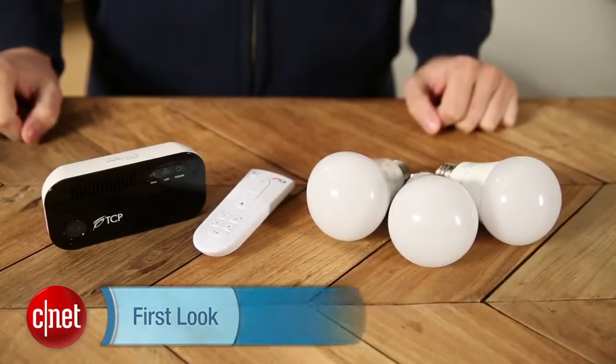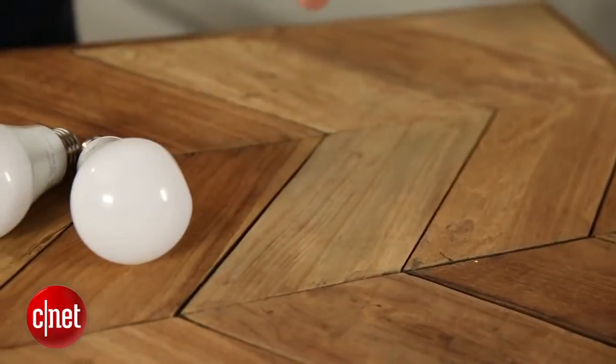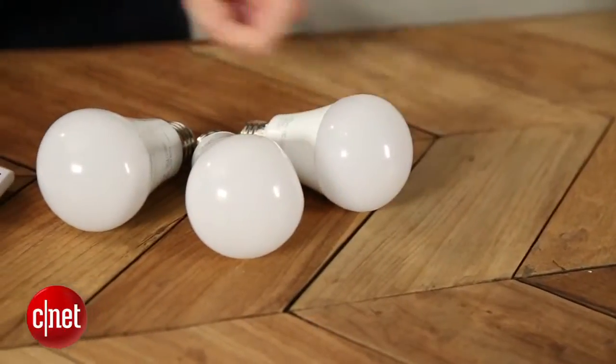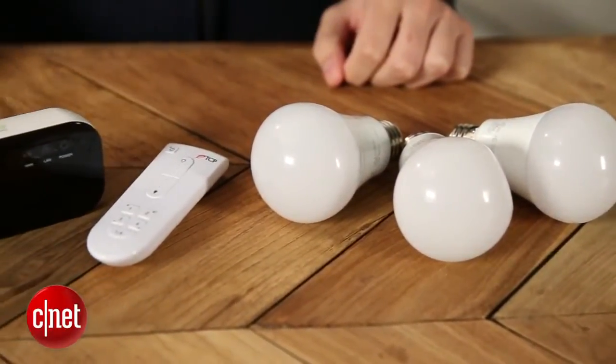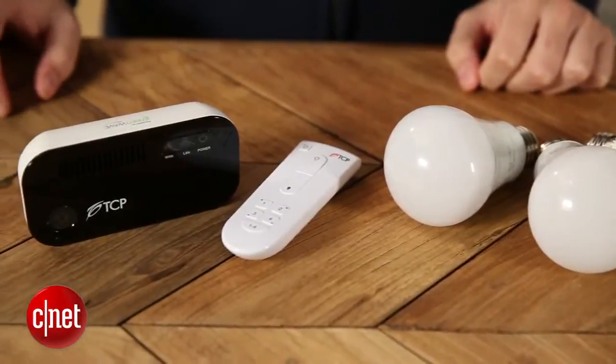Now this is a new smart home option for your lighting needs that offers three LED light bulbs, a smart hub for control of those bulbs, and also a remote control so you can physically press a button and dim them or turn them on or off.